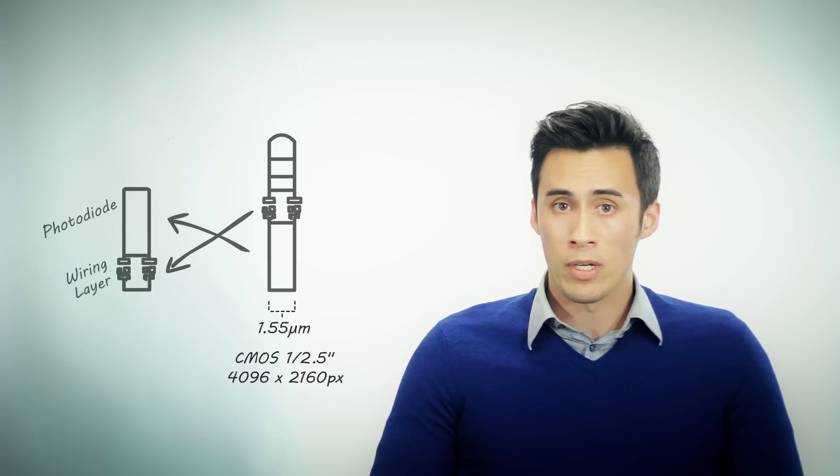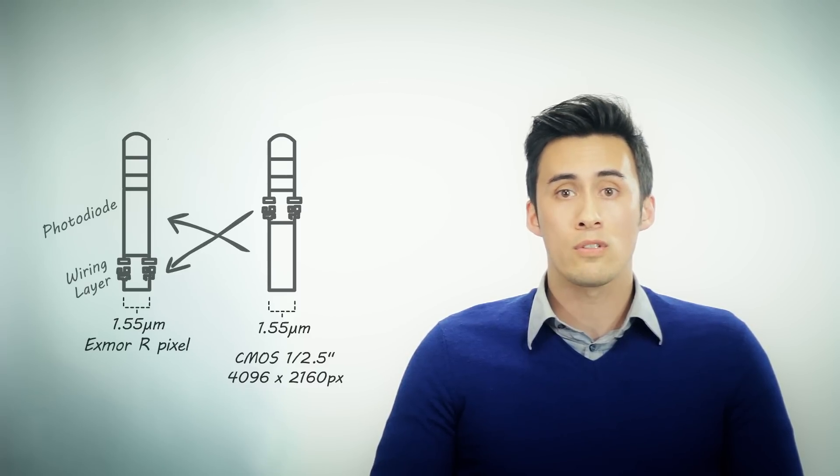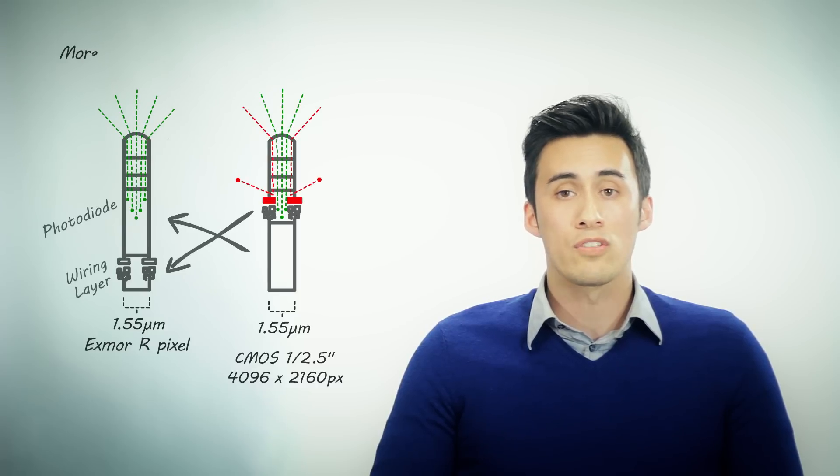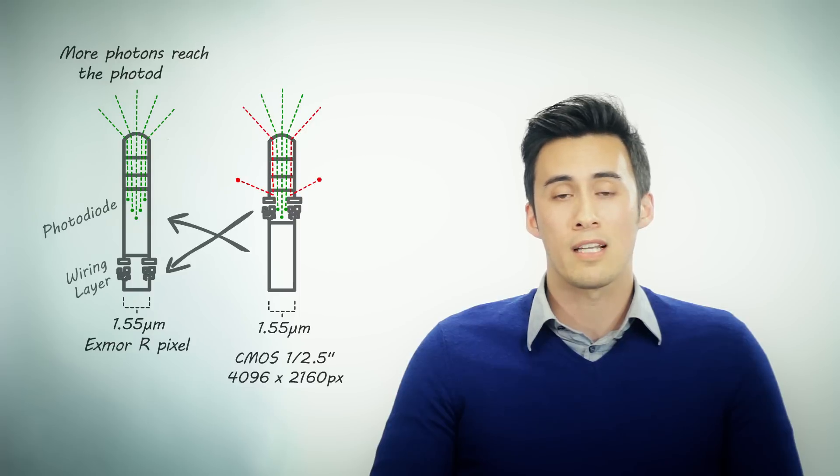By basically flipping the wiring layer with the photodiode, the photodiode is completely free from any wiring obstruction, allowing significantly more light to be collected.